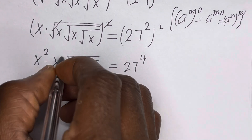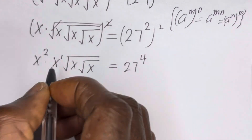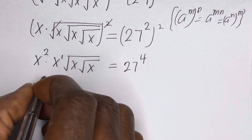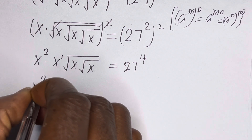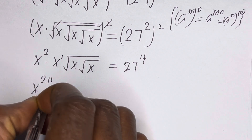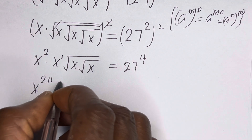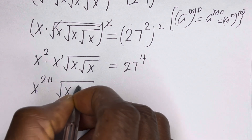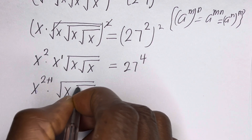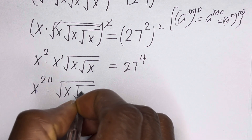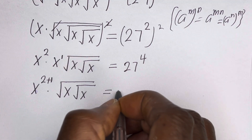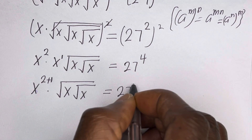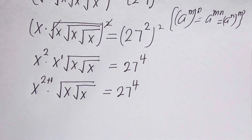Now here, this is also to the power of 1. We have S raised to power 2 plus 1, multiplied by square root of S, then square root of X is equal to 27 to the power of 4.